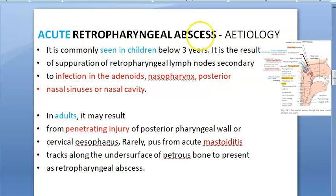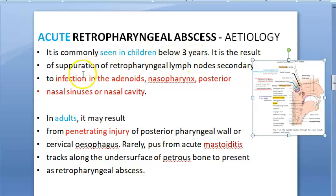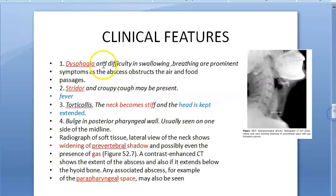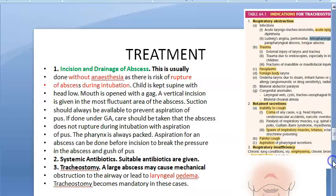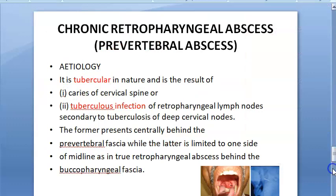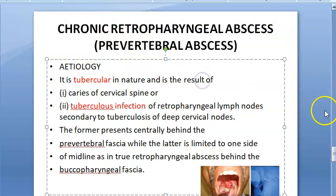Acute retropharyngeal abscess is the infection of the retropharyngeal space, seen in children, caused by mastoiditis and other sources. Clinical features include difficulty swallowing and breathing, inspiratory stridor, fever, extended head with stiff neck (torticollis). X-ray shows widening of the prevertebral shadow and gas. Treatment is incision and drainage without anesthesia, with antibiotics and tracheostomy if there is laryngeal edema. Chronic retropharyngeal abscess refers to prevertebral abscess from tuberculosis.